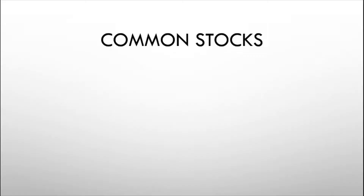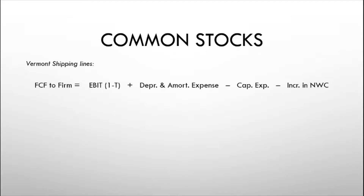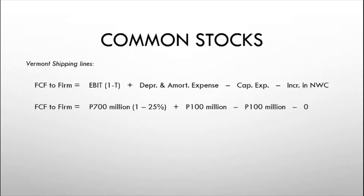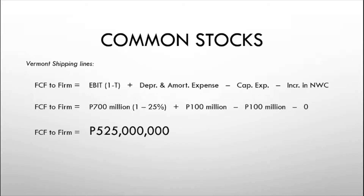To arrive at the value of the stock, we begin with free cash flows to the firm in 2021. For Vermont Shipping Lines, using the formula: EBIT of 700 million times (1 minus 25% tax rate), plus depreciation and amortization of 100 million, less capital expenditure of 100 million, less zero increase in net working capital — we get free cash flows to the firm of 525 million pesos.